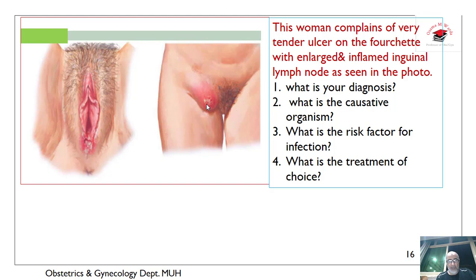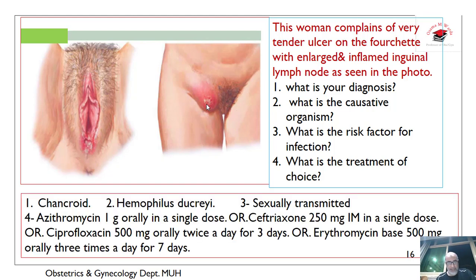The causative organism is Haemophilus ducreyi. The risk factor: it is sexually transmitted. Treatment of choice: azithromycin 1 gram orally in a single dose, or ceftriaxone 250 mg intramuscular in a single dose, or ciprofloxacin 500 mg orally twice a day for three days, or erythromycin base 500 mg orally three times per day for seven days.